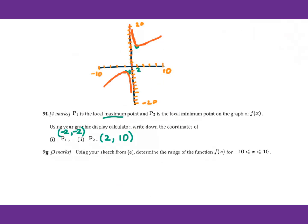For 9g, using your sketch from part e, determine the range of the function f of x for x greater than or equal to negative 10 and less than or equal to 10. That is from negative infinity up to negative 2, then from 10 to positive infinity. Therefore we write from negative infinity to negative 2 — negative 2 is a closed bracket — union set from 10 to infinity.